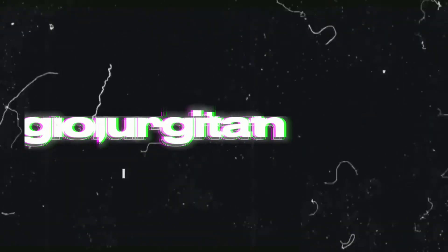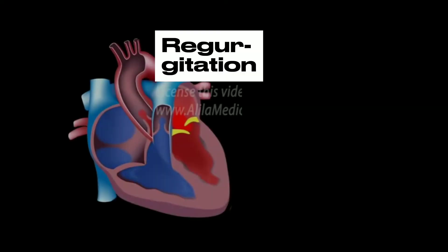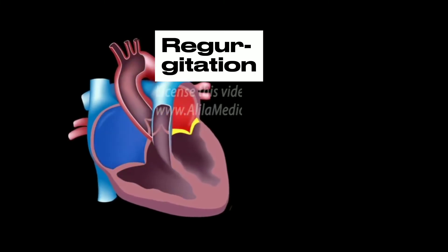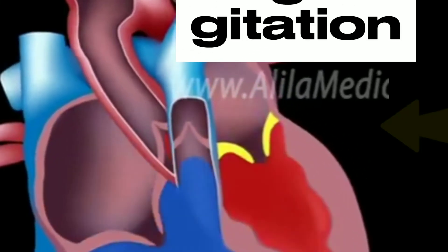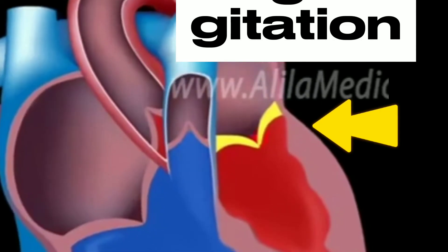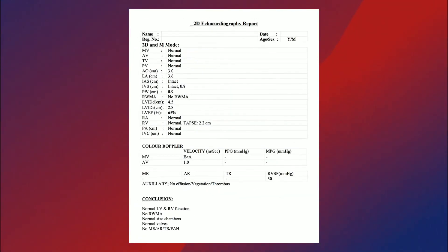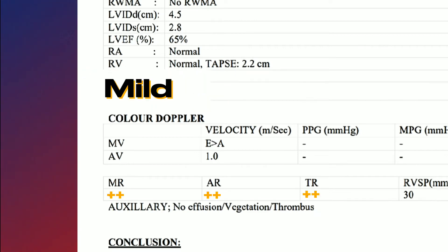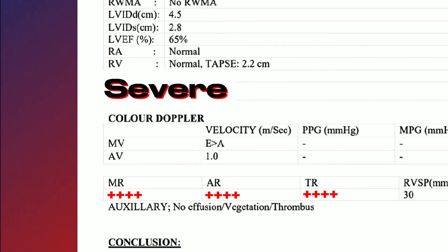Next is regurgitation. Valve regurgitation is a condition in which the heart's valve doesn't close tightly, allowing blood to flow backward in the heart. Regurgitation can happen in the mitral valve, aortic valve, and tricuspid valve. The severity of regurgitation can be classified as trivial, mild, moderate, and severe.